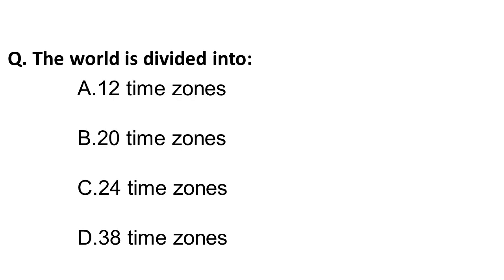The next question is: the world is divided into how many time zones? It generally comes to mind that if every hour there is one time zone, it should be 24, but the correct answer for this question is not 24. The world is divided into 38 time zones.